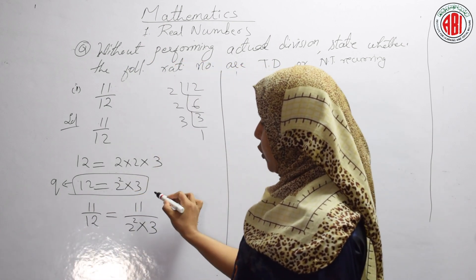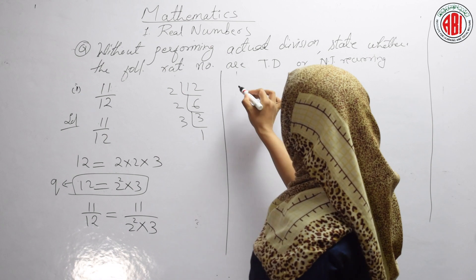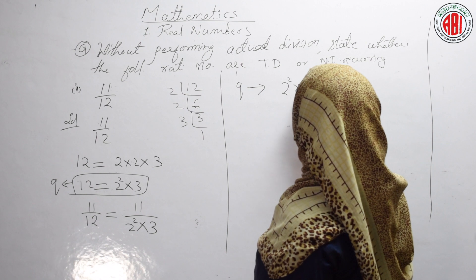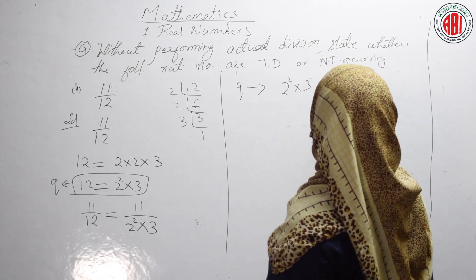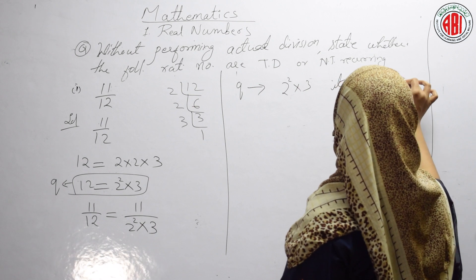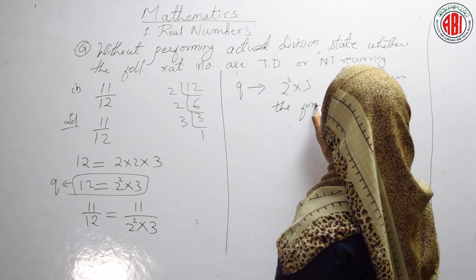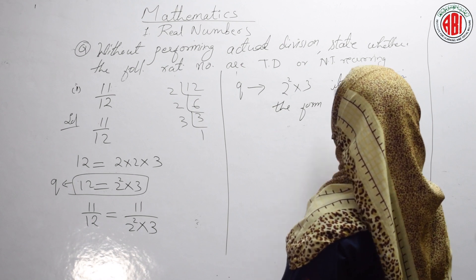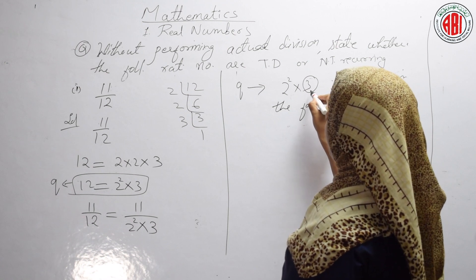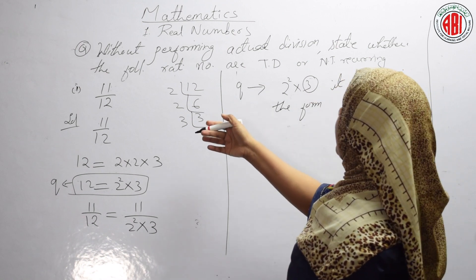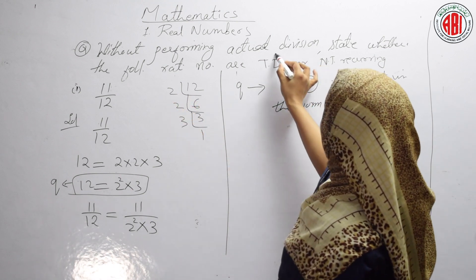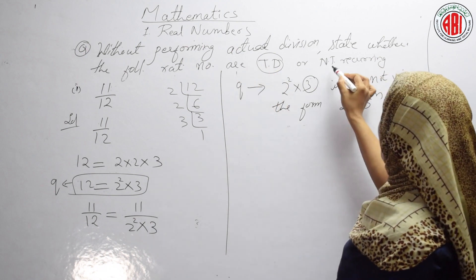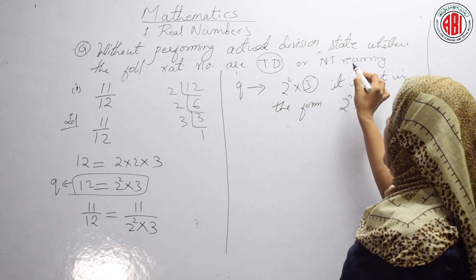So 11/12 equals 11/(2² × 3). That is Q, the divisor. Q is in the form 2² × 3, which means it is not in the form 2ⁿ × 5ᵐ. For a terminating decimal, Q should be in the form 2ⁿ × 5ᵐ. For a non-terminating recurring decimal, it should not be in the form 2ⁿ × 5ᵐ.